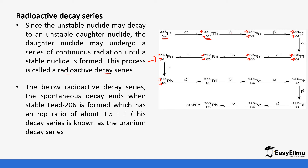Then we have a beta particle where the mass number remains the same but the atomic number increases by one. After that, another beta particle is released where the mass number is the same but the atomic number again increases by one. Then an alpha particle is emitted where the mass number decreases by four and the atomic number decreases by two.